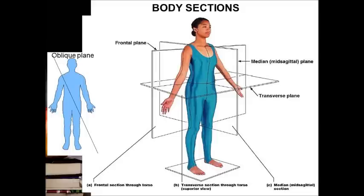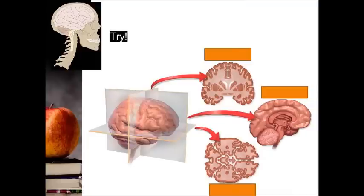So all the terms of body sections that I have just mentioned can be seen clearly in this image. There are frontal, transverse, sagittal, and oblique. Now it is your turn — can you name the terms of sections in each box? Small tip: there is no oblique section in the image.